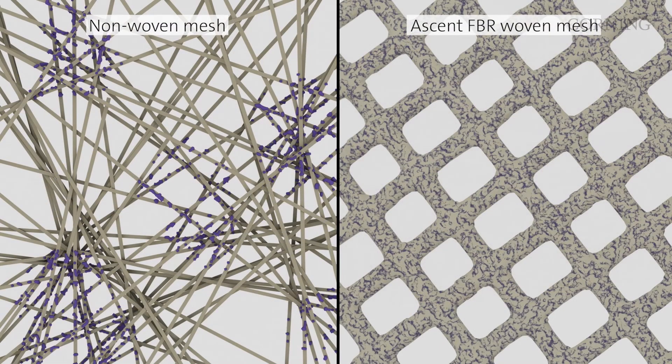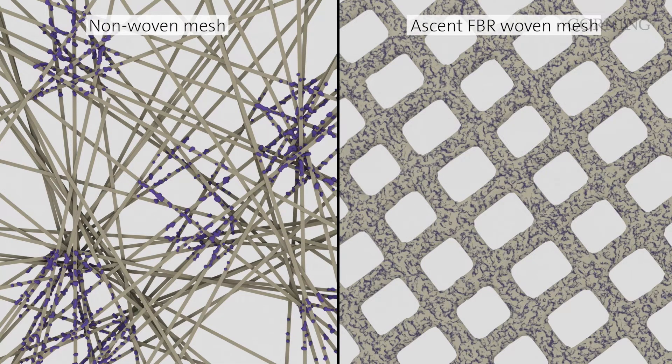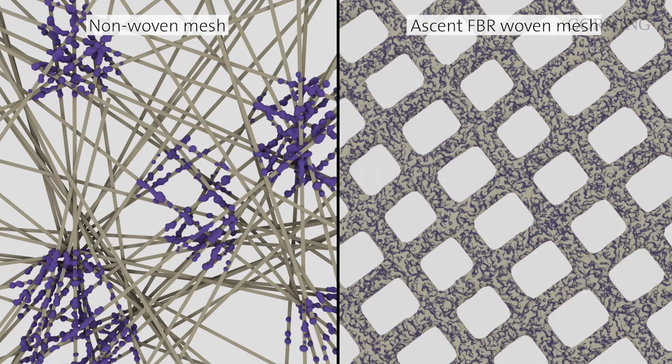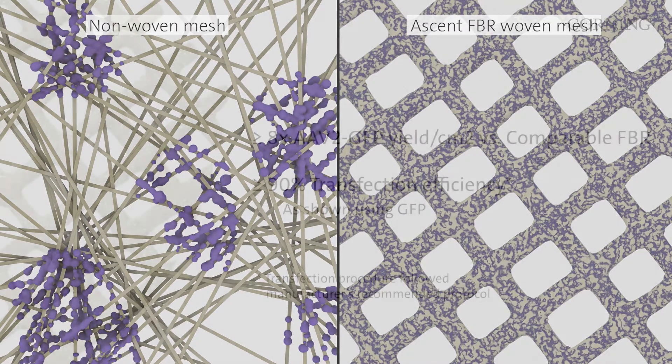The woven nature of the mesh enables uniform fluid flow and cell distribution, which helps to enhance cell health and productivity and achieve high yields of cells and cell-based products.